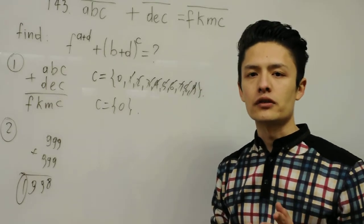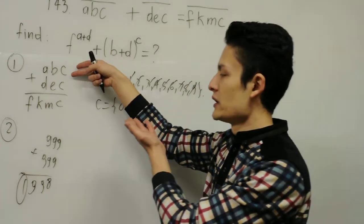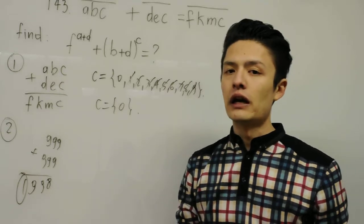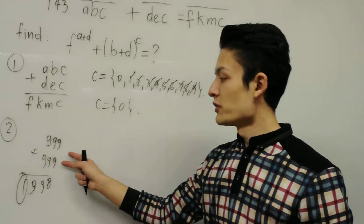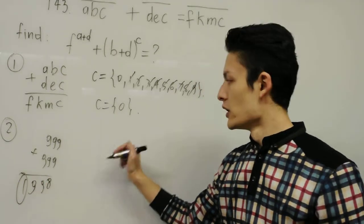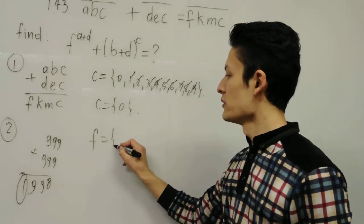F cannot be 2,000 because it's three-digit number and three-digit number. If you add, we cannot have, in the maximum possibility, we're having only 1,000.